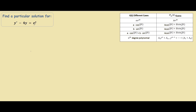We look at this term on the right hand side, e to the power of x, and we're trying to find some general form where we can plug in for our y particular. Since it looks very similar to our first row, ae to the power of beta t, we will try y particular equals ae to the power of x. We ignore beta because there's no constant in front of our x, so our derivative of y particular is also ae to the power of x, and y double derivative equals ae to the power of x.